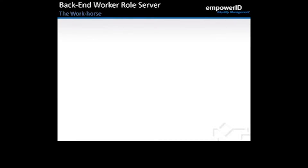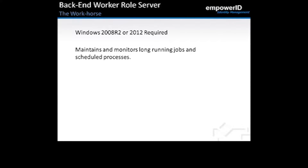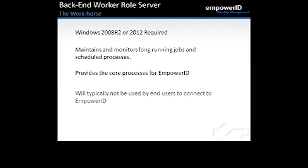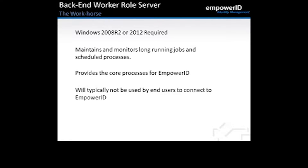Now let's take a look at our backend worker role server — basically the workhorse of the system. The operating system is required to be Windows 2008 R2 or 2012. The worker role server will maintain and monitor any long-running jobs and scheduled processes, providing the core processes for Empower ID. We typically will not use this server as an end-user point. It will be an inside-the-network server, as the connectivity it needs with external systems means it must remain on the internal network.